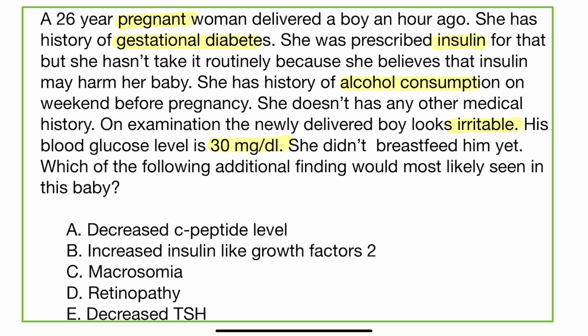The options are: decreased C-peptide level, increased insulin-like growth factor, macrosomia, retinopathy, and decreased thyroid stimulating hormone.